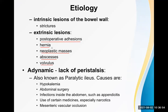Hernia is another common cause of intestinal obstruction because the usual content of a hernia is a bowel loop — a perfect example being inguinal hernia. In the early phase it may be reducible and cause no obstruction, but later if it becomes irreducible or incarcerated it becomes obstructive — the bowel content cannot flow distally.